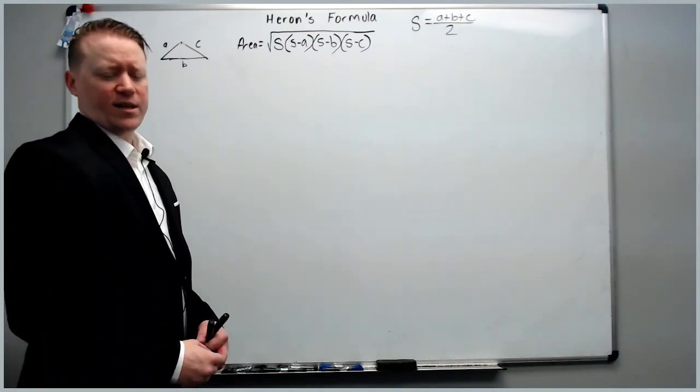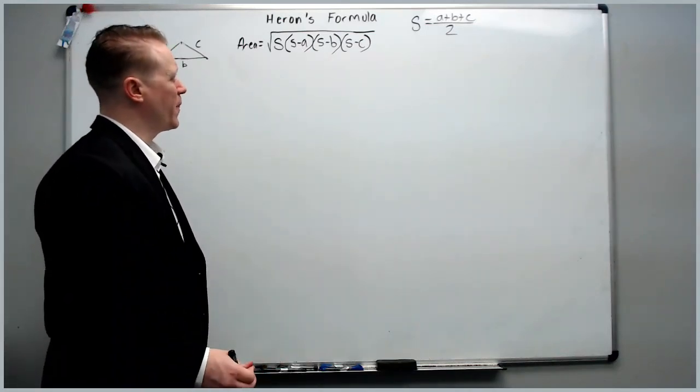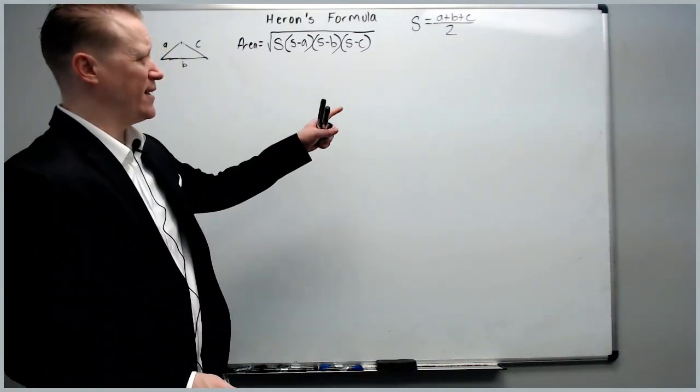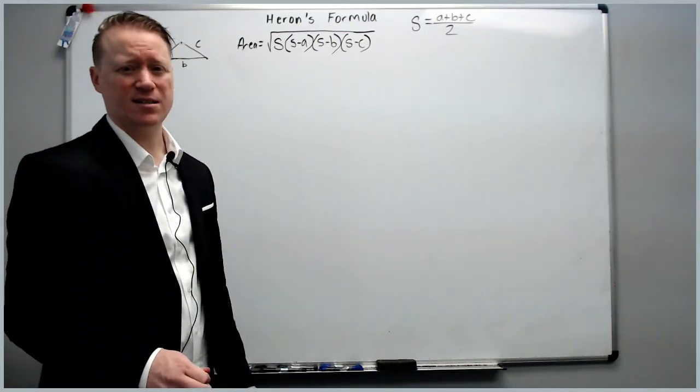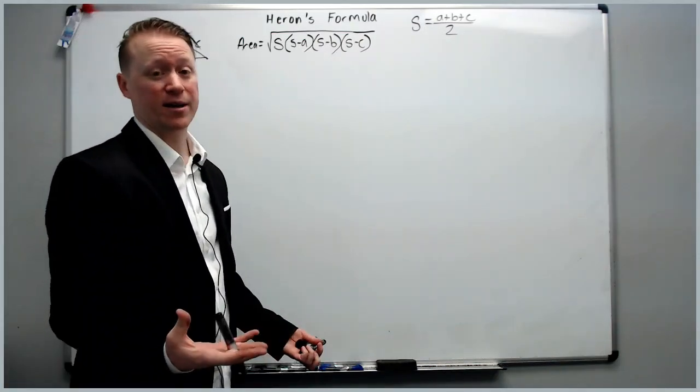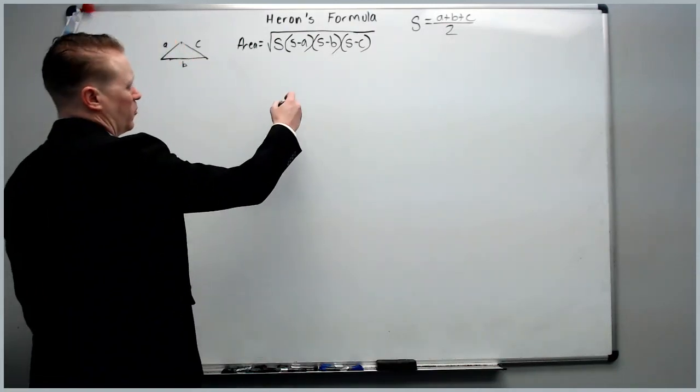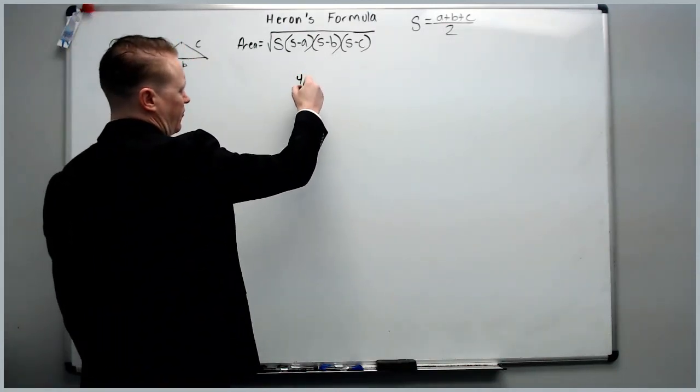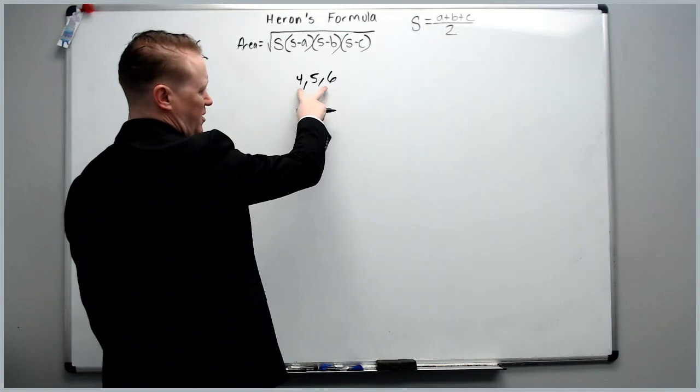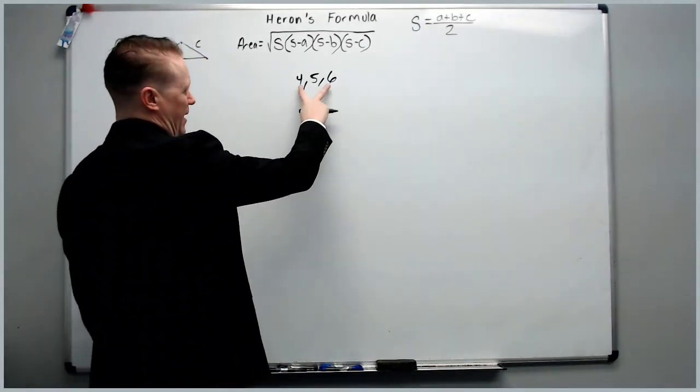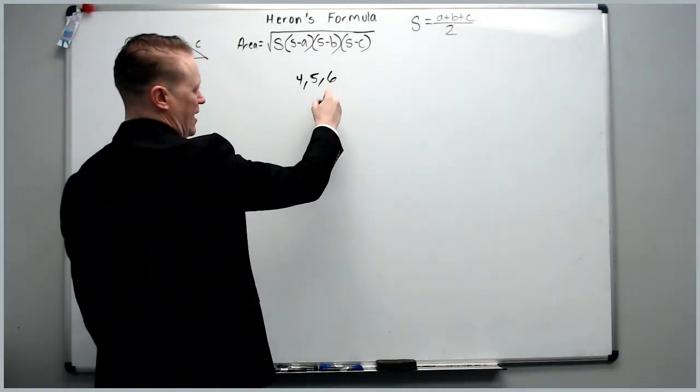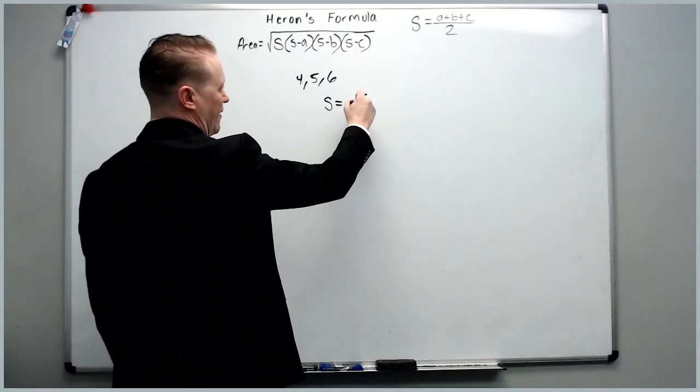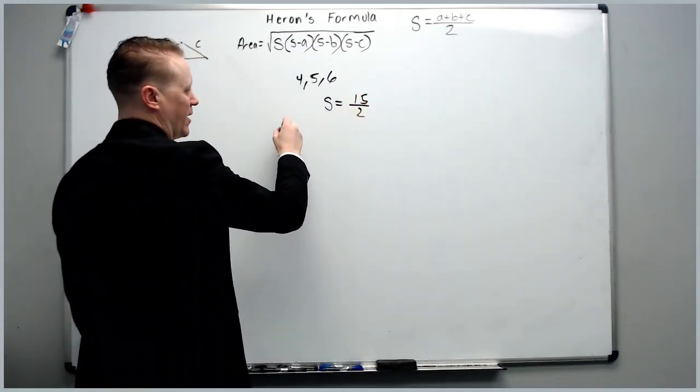Okay, and now for the examples. Heron's formula can be applied anytime you have all three sides and you need the area. So, we'll just make some random ones here. 4, 5, and 6. Let's say these are your side lengths. Add them up. 10, 15, S is going to equal half of that. 15 over 2. Make your area formula. You have S here. You put S in.